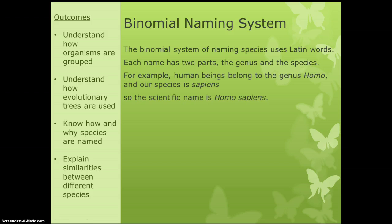This brings us to the binomial naming system. This is where biologists use Latin words to name organisms. Each name has two parts and is made up of its genus and its species — the last two groups in our classification system. For example, human beings belong to the genus Homo and our species is Sapiens, so the binomial name for human beings is Homo Sapiens. The first part is the genus and the second part is the species.